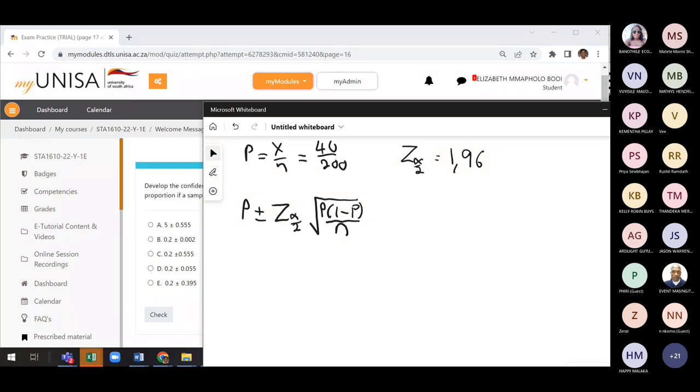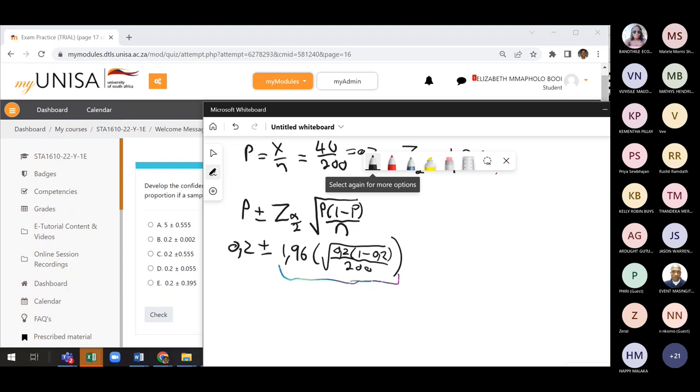What is 40 divided by 200? 0.2. Then just substitute 0.2 plus or minus. You can see that the answer only needs you to solve the margin of error. 1.96 times the square root of 0.2 times 1 minus 0.2, divided by 200. That's what you need. You just need to solve this side, only that part.